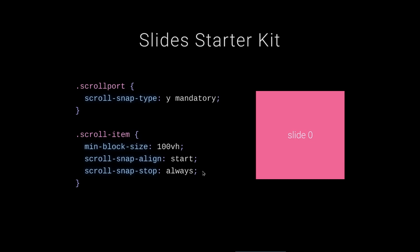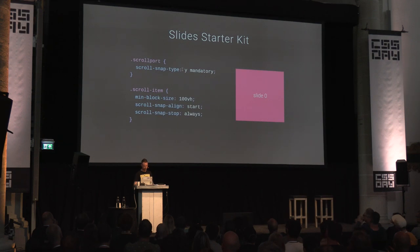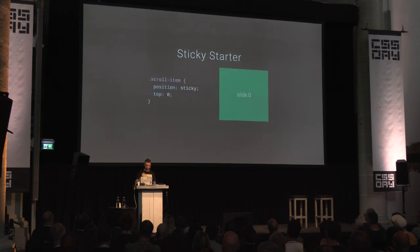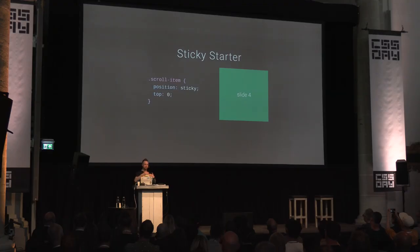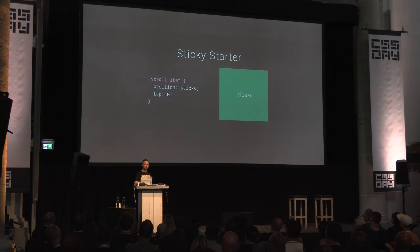Here's a really cool trick: target the scroll items and give them position: sticky; top: 0. As a new item comes in it slides in like normal, but then it's stuck. DOM order ensures subsequent children are on top. We get a really cool stacked slide effect from just two lines of CSS.